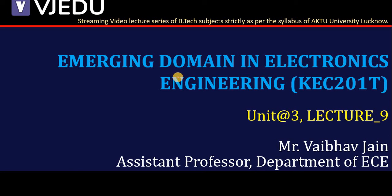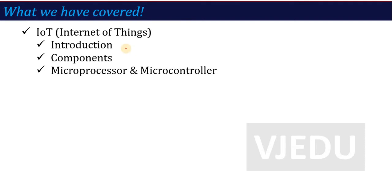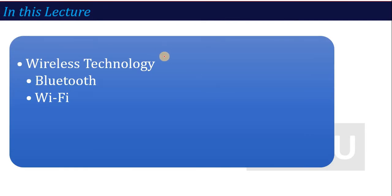Hello everyone, welcome to the video lecture series of Emerging Domain in Electronics Engineering. The subject code is KEC201T and this is lecture number 9 of unit number 3. In the previous lecture, we started the IoT part of unit 3, discussing basic definitions, components, microprocessor and microcontroller. In this lecture, we are going to talk about wireless technology — that is Bluetooth and Wi-Fi.